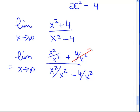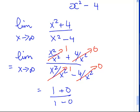x squared over x squared goes to 1, that goes to 0, that goes to 0. So, what we have here is 1 plus 0 over 1 minus 0. The answer to that is just 1. So, the asymptote here is 1.